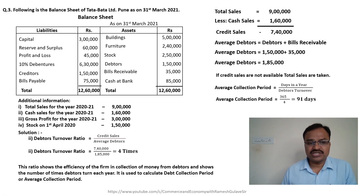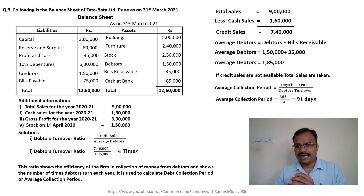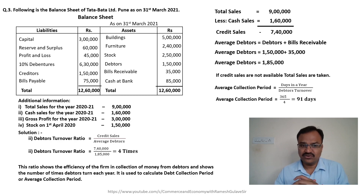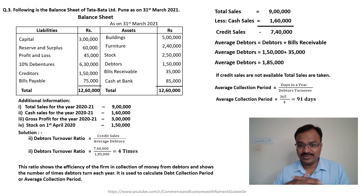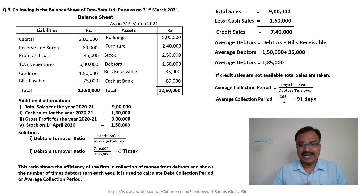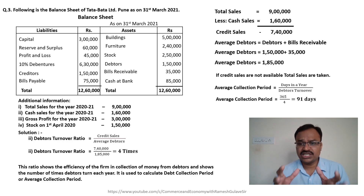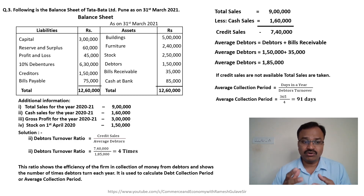There are various formulas for debtors turnover ratio and average collection period - it is one of the important ratios in ratio analysis. I have taken this basic formula here, but if you are interested to know the other formulas for debtors turnover ratio and average collection period and how we can use them to analyze financial statements, let me know in the comment section and I will make a separate video on debtors turnover ratio and average collection period.